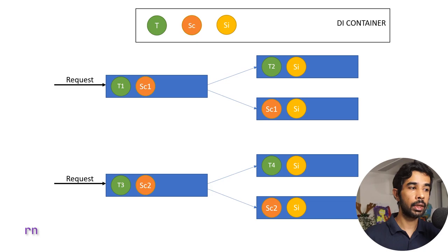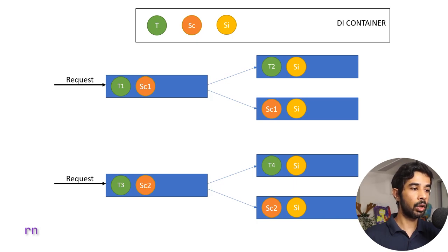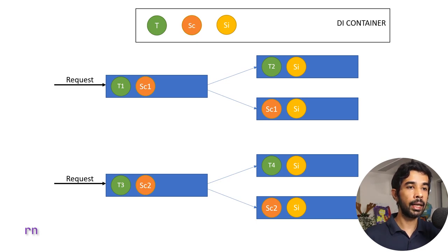When a new request comes in: with transient, it gets new instances T3 and T4. With scoped, it gets a new instance SC2 for that particular request, but all dependencies within that same request share SC2. With singleton, it gets exactly the same instance as the previous request. This illustrates the pattern for these three lifetimes.